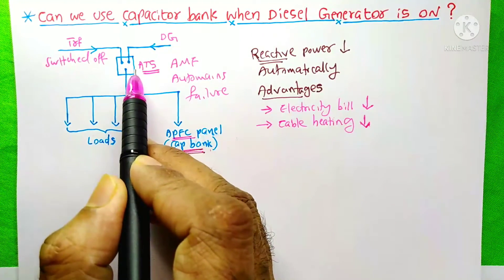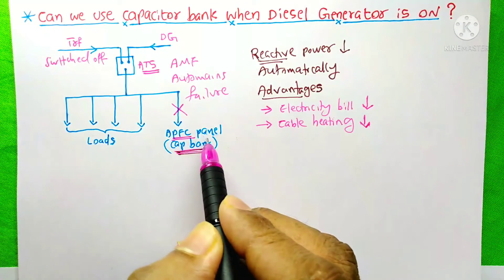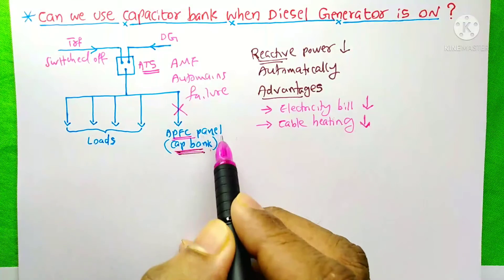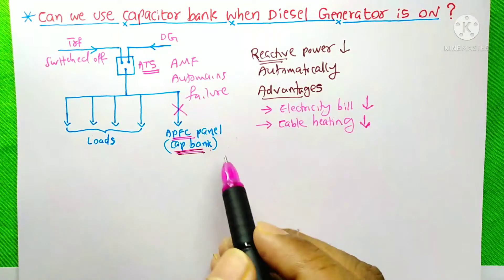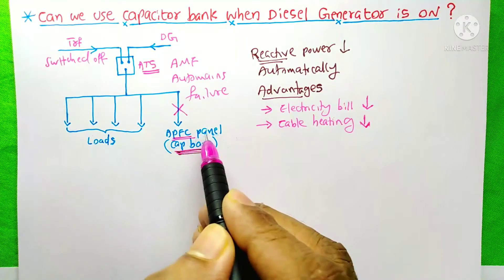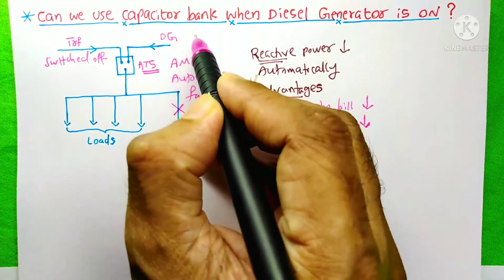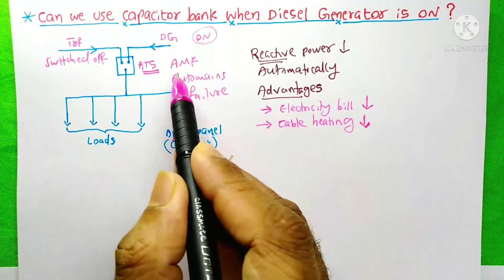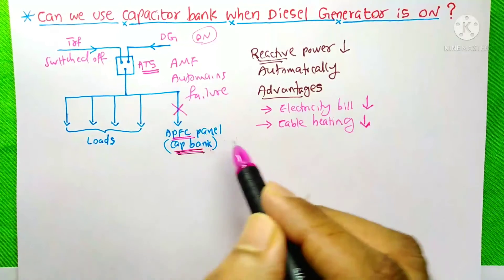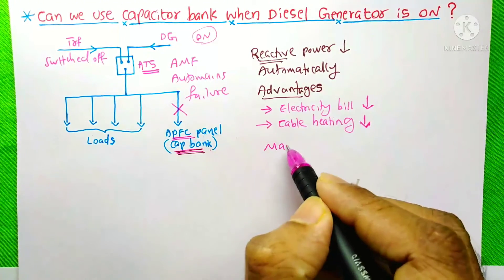But before that, we need to switch off this APFC panel circuit breaker — and this is also done automatically. The provision should be made to switch off this APFC panel before the DG is switched on. This AMF relay handles it automatically, but in some cases some buildings have only a manual changeover switch.